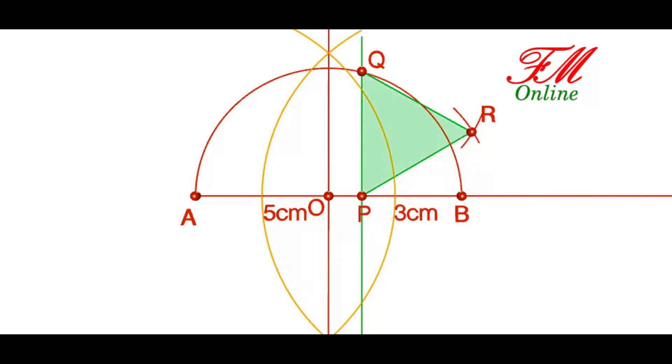Now we got a triangle PQR with all the sides equal to root 15.